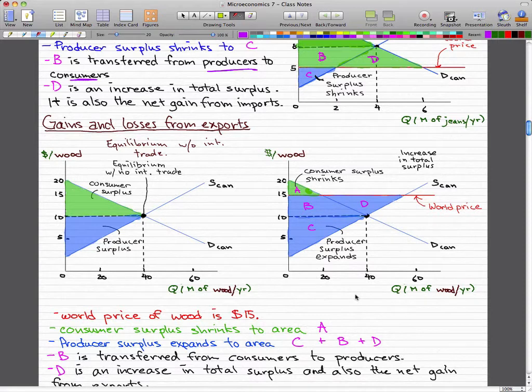Now in this graph, we'll pop in some international trade, some exports. Now we know that the world price of wood is actually $15. So the consumer surplus in this case shrinks instead of the producer surplus. So remember, this was consumer surplus before.